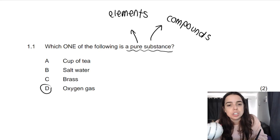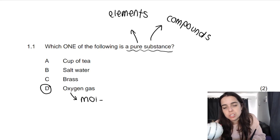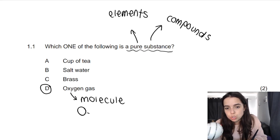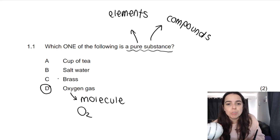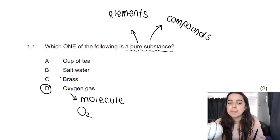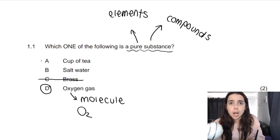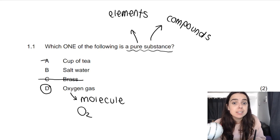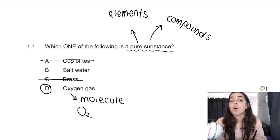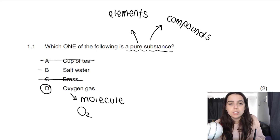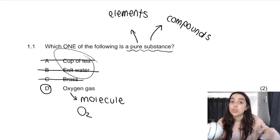The answer is oxygen gas. That is actually a diatomic molecule — it's O₂ — which counts as a pure substance. Brass seems like it would be an element but it's not; it's an alloy and actually a mixture. A cup of tea is a homogeneous mixture. Salt water is also a homogeneous mixture. Both tea and salt water are solutions — not pure substances.